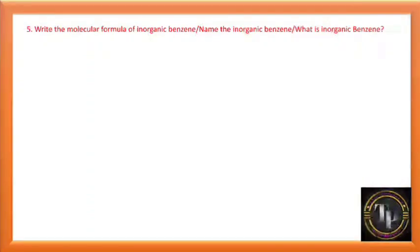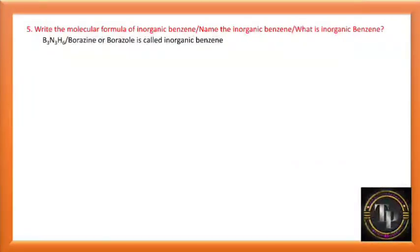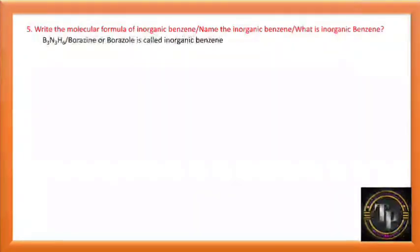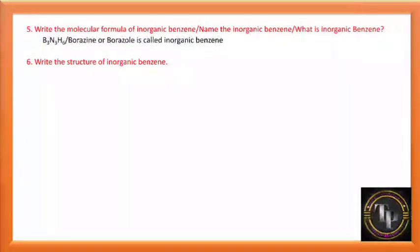Write the molecular formula of inorganic benzene. Inorganic benzene is B3N3H6. Organic benzene is C6H6. B3N3H6 is also known as borazine or borazole, and it is called inorganic benzene. Write the structure of inorganic benzene — draw it from the NCERT textbook.